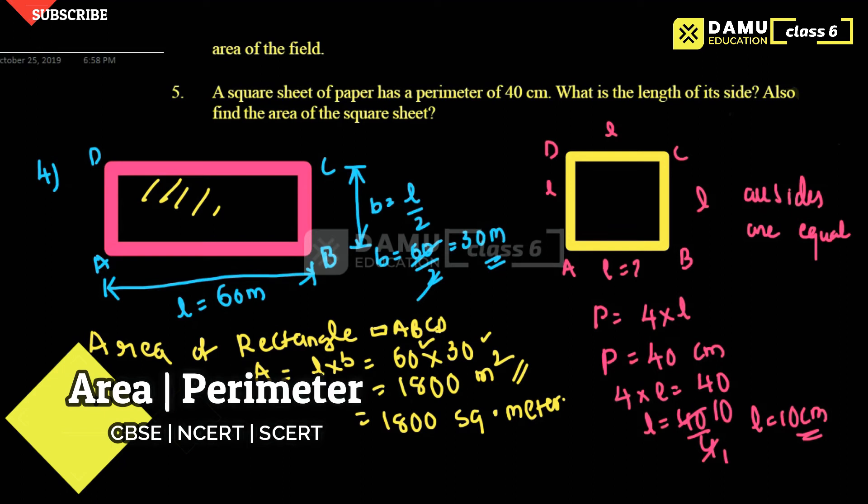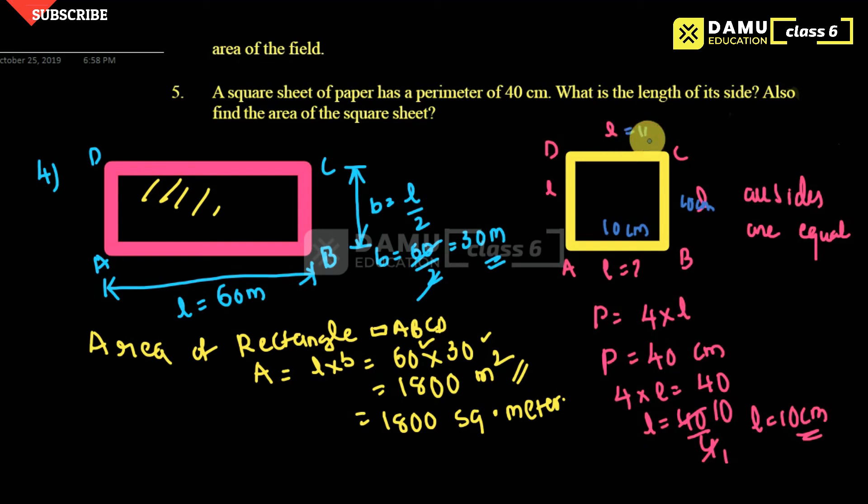So we got 10 centimeters. You can write 10 centimeters on each side. Here length will be 10 centimeters, here also 10 centimeters, here also 10 centimeters, and here also 10 centimeters.